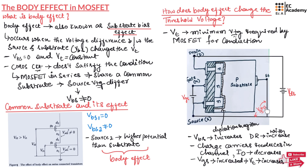So as VBS increases, the width of the depletion region also increases, reducing the diffusion of charges from the substrate into the channel. The majority charge carriers in the channel decrease, causing the drain current to decrease. To overcome this effect, we need to increase the voltage across gate and source, which increases the threshold voltage of the MOSFET.